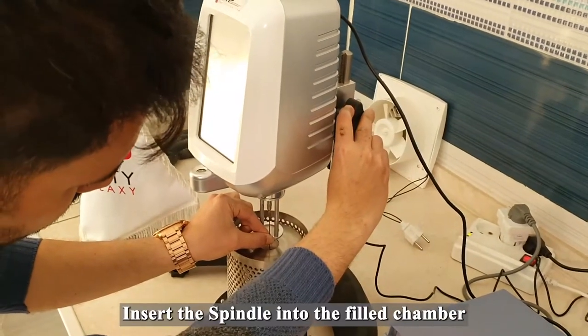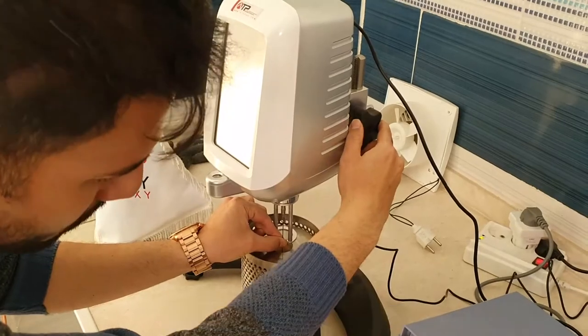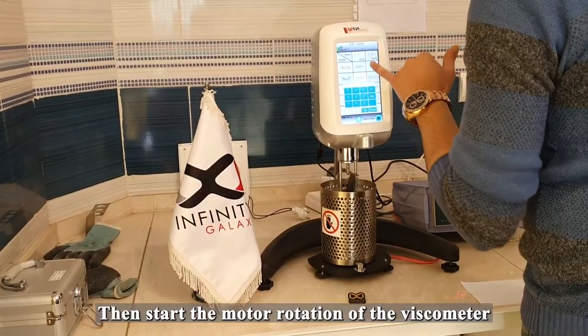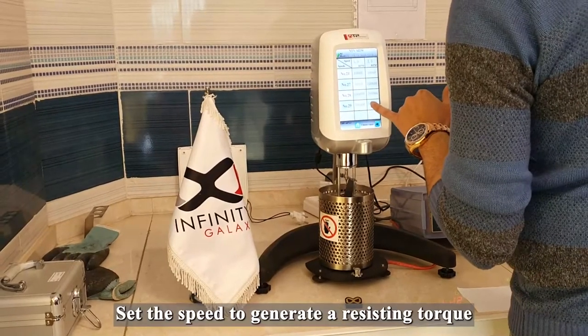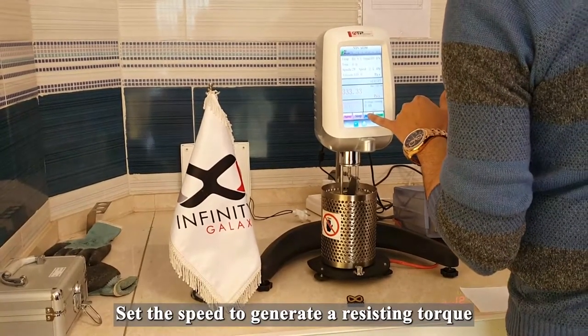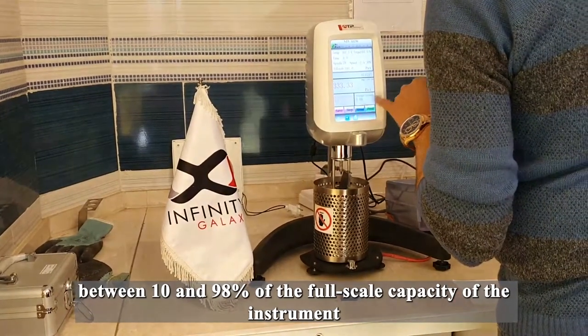Insert the spindle into the field chamber and couple it to the viscometer. Then, start the motor rotation of the viscometer. Set the speed to generate a resisting torque between 10 and 98 percent of the full-scale capacity of the instrument.